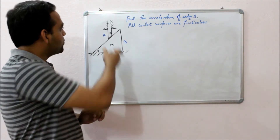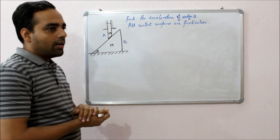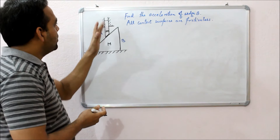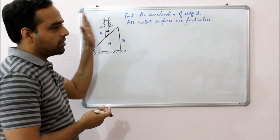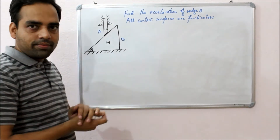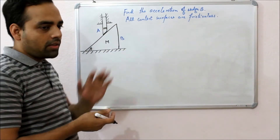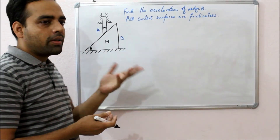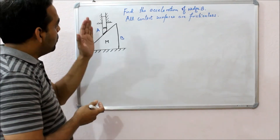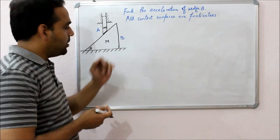As you can see in this problem, a rod rests on a wedge and the motion of rod A is restricted along this direction with the help of two rigid supports. All the surfaces are frictionless, so there are no dissipative forces acting on the body. We have to find out the acceleration of wedge B.